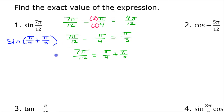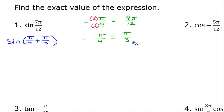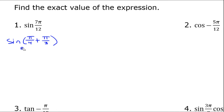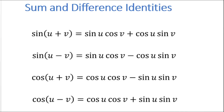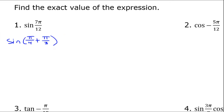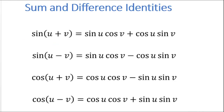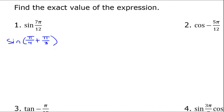Notice that both of these are special angles and we have memorized the trig values for them. So now I'm going to use my sum and difference formulas. The sine of a sum is sine·cosine plus cosine·sine, so that means I'm going to have sine(π/4)·cosine(π/3) plus cosine(π/4)·sine(π/3).